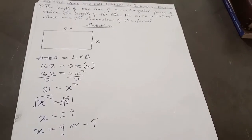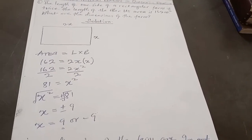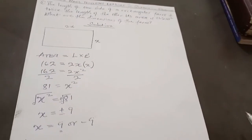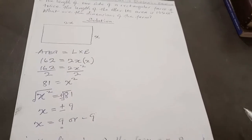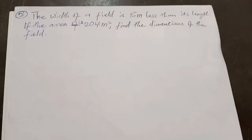You can see that when we multiply the two dimensions and put them into the formula — length times breadth, which is the area — it gives us 162 square meters. Let's take another example.